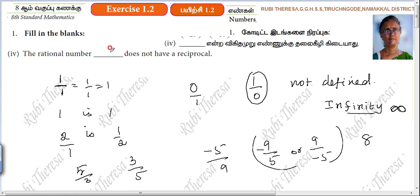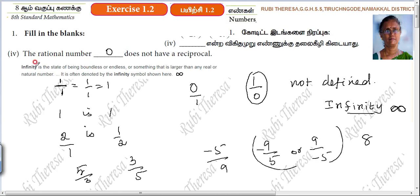0 does not have a reciprocal. So infinity — 1 by 0 — that's the reciprocal. Infinity is the state of being boundless or endless.